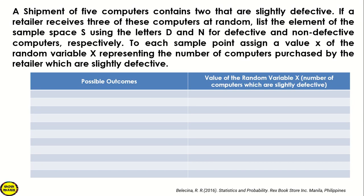Hello mga kawamat, in this video lesson we will discuss how to find the values or the possible values of a random variable. The problem is: a shipment of 5 computers contains 2 that are slightly defective. If a retailer receives 3 of these computers at random, we are going to list the elements of the sample space S using the letter D and N for defective and non-defective computers respectively. To each sample point, assign a value x of the random variable X representing the number of computers purchased by the retailer which are slightly defective.